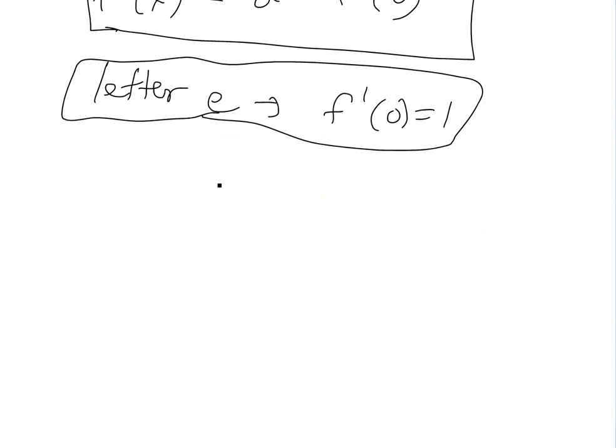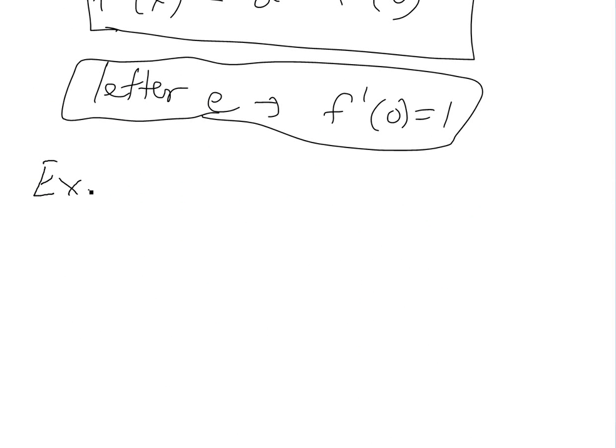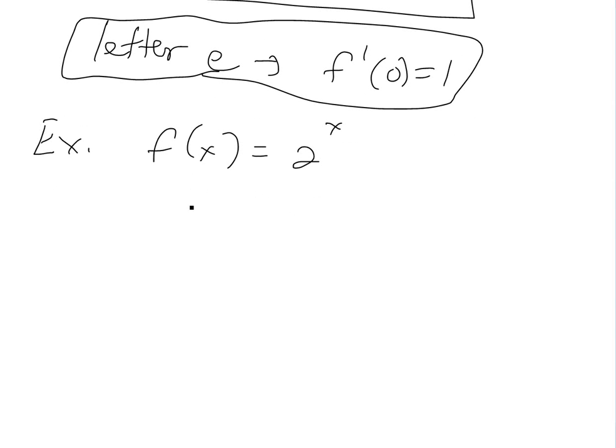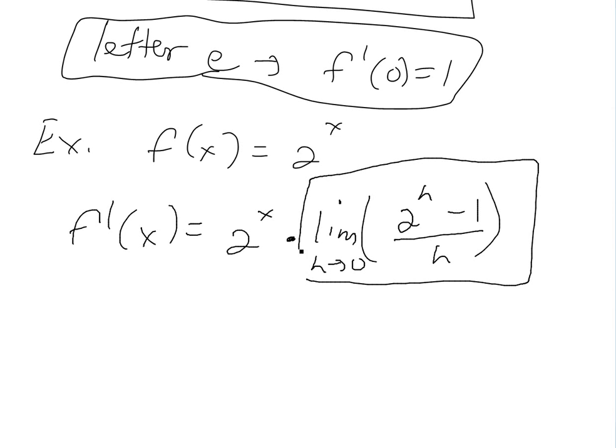So if you were to do, let's say an example, let's say f(x) equals 2^x. So then if you do derivative of it, this will just be 2^x, and then this one's gonna be times limit h approaches zero of 2^h minus one over h. And I'll show you in my later video that this actually has a limit.